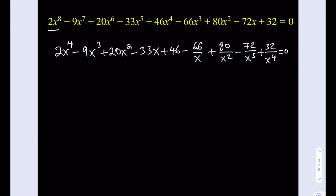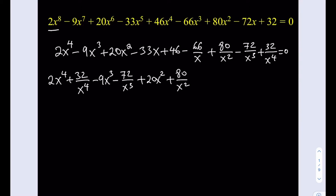Now we're going to start doing something interesting, which is pairing up the terms. We're going to take the first and last term and put them together. And then the second term with the second from the last, which is 72 over x cubed. Then I'll pair up 20x squared with 80 over x squared, and I'll pair up negative 33x with negative 66 over x. We were able to write all the terms, and we got to 46 — 46 is by itself because there's no matching term, and that's going to be our constant.